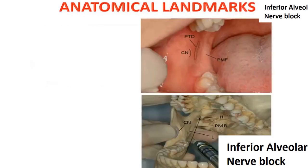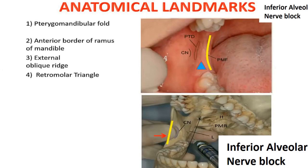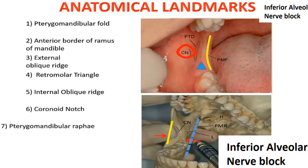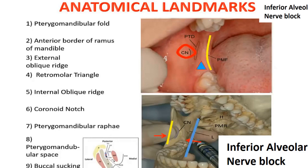The anatomical landmarks include: the pterygomandibular fold, anterior border of the ramus of the mandible, external oblique ridge, retromolar triangle, internal oblique ridge, coronoid notch, pterygomandibular raphe, pterygomandibular space, and the buccal fat pad.